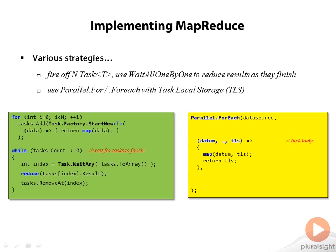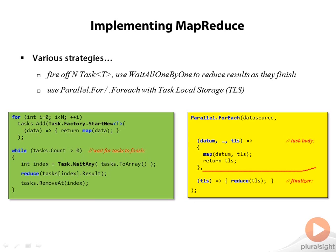The TLS object is returned as the result of the computation. So where does it go after it's returned? Interestingly, it's either passed into another iteration of the loop — if there's more data to process, we pass the TLS into the next iteration — or if there are no more elements to process, the TLS object is passed into what's called a finalizer, where it's reduced into the final result. The finalizer is a lambda expression with a TLS object as its only argument.